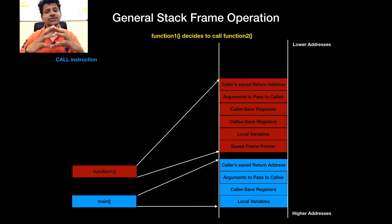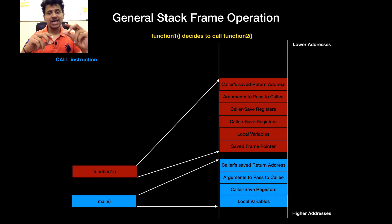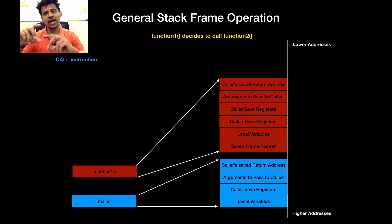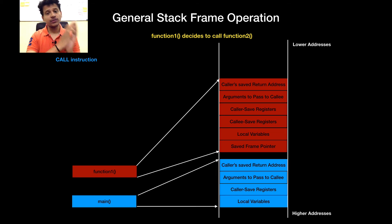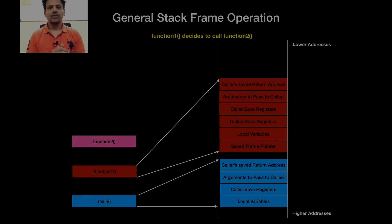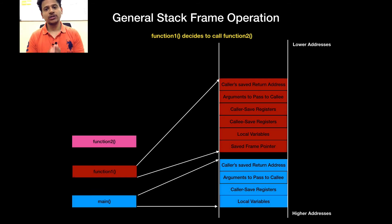So let's recall: when the call instruction gets executed, the next address after the call instruction will be pushed onto the stack, because when function 2 finishes its execution, it can return to function 1. This is function 2 and its function 2 stack frame.